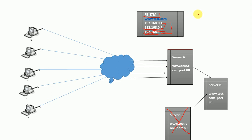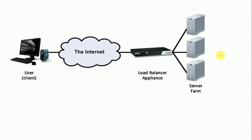There are two types of load balancing in F5 LTM: static and dynamic. In static there is round-robin and ratio — what I explained was round-robin. In dynamic there are techniques like least connection, fastest, and predictive, which you can also select. Now let's take an example of how F5 LTM works. This is my user who wants to access my website.